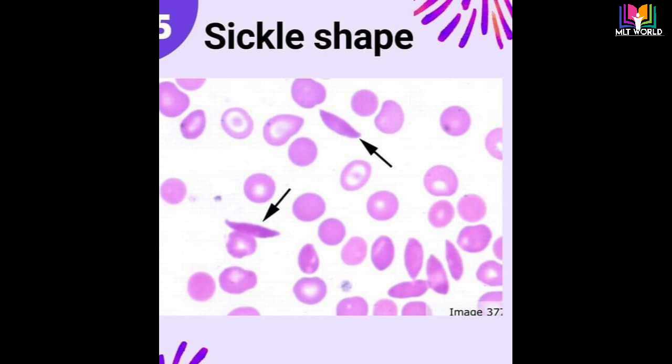There are several types of sickle cells, but the most common are: sickle cell anemia, sickle cell hemoglobin SC disease, sickle beta thalassemia, and sickle beta-zero thalassemia. The most confirmative test to diagnose sickle cell disease is hemoglobin electrophoresis, in which we can see how much fraction of each hemoglobin type is present.